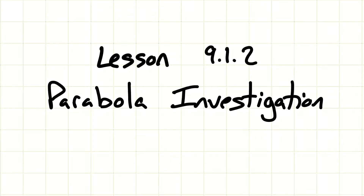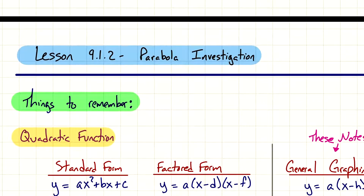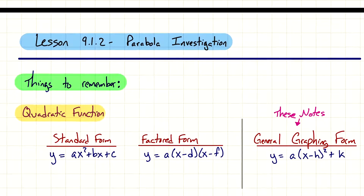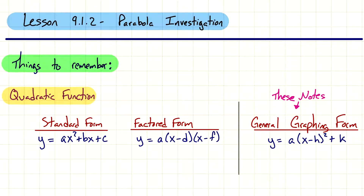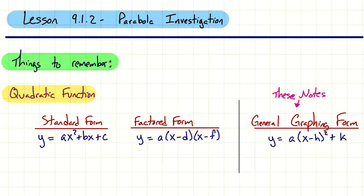Hey everyone, this is lesson 9.12 on parabola investigation. Technically we've already talked about parabolas. Earlier in our book, I think it was chapter 5, we talked about quadratic equations and quadratic functions, and the graph of those looks like a parabola. We've seen the basics of how to graph a parabola, but we haven't really looked into different variations of those graphs.